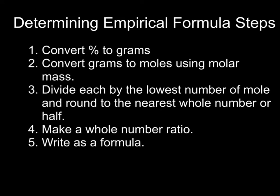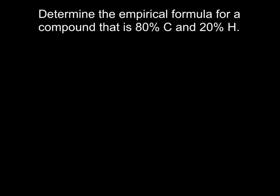Let's look at an example. Determine the empirical formula for a compound that is 80% carbon and 20% hydrogen. Percents are based out of 100, so I'm going to assume I have 100 grams of my compound. That means 80% of 100 is 80 grams of carbon, and 20% of 100 is 20 grams of hydrogen.